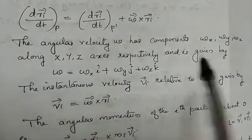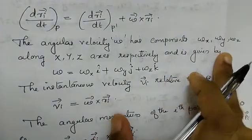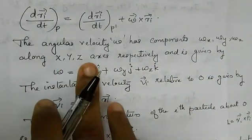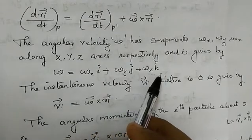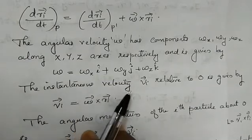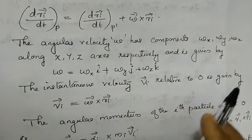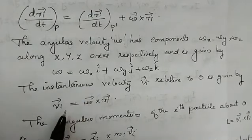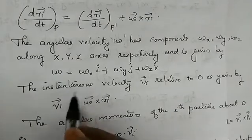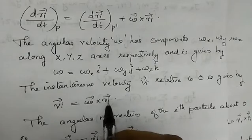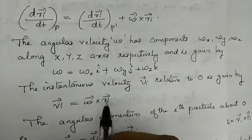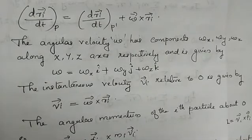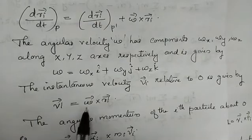The angular velocity omega has components omega_x, omega_y, and omega_z along the x, y, z axes respectively, and is given by omega equal to omega_x i-hat plus omega_y j-hat plus omega_z k-hat. The instantaneous velocity v_i is equal to omega cross r_i.